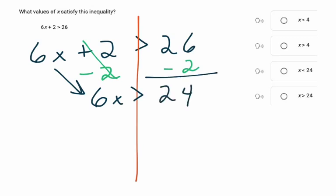And then our last step, 6x is greater than 24, going to divide by 6, going to divide by 6, it's going to cancel out. x is, now we didn't divide by negative 6, we divided by a positive 6, so the inequality is going to stay as a greater than sign.